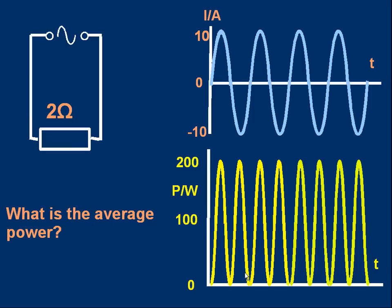It's got twice the frequency as the current. The interesting thing about a sine curve is it's symmetrical about the middle, so we can ask: what is the average power? You might want to pause and think about that — what do you think the average power will be for this pattern of power versus time?